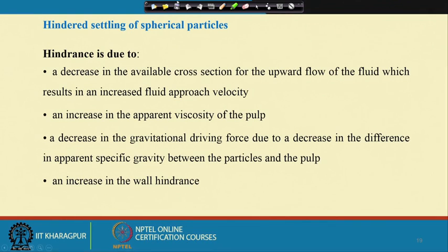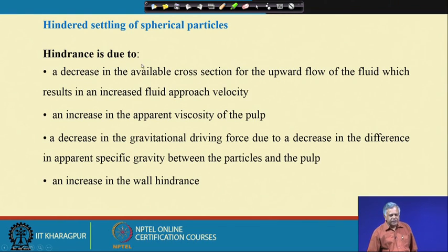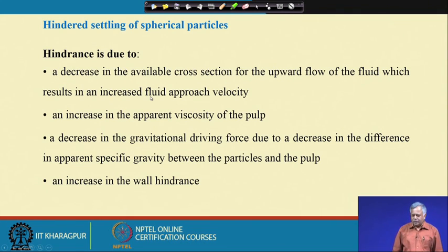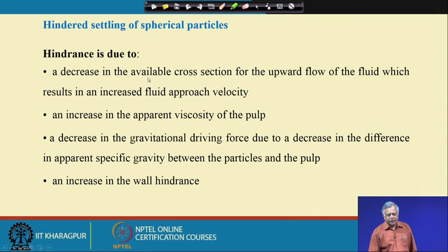In free settling, the forces acting opposite to particle movement are drag force and buoyancy force. But in hindered settling conditions there are additional forces — hindrance means resistance. When particles are crowded, the settling velocity of each individual particle decreases compared to free settling. In essence, we want to incorporate a correction factor for the particle crowding effect into the free settling velocity.